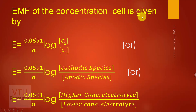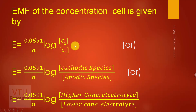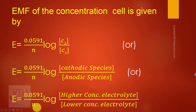The EMF of the concentration cell is given by: E = 0.0591 / n × log(C2 / C1), where n is the number of electrons lost during oxidation or gained during reduction in a balanced equation. This equation can also be represented as E = 0.0591 / n × log(concentration of cathodic species / concentration of anodic species), which is useful for solving problems. It can also be written as E = 0.0591 / n × log(concentration of higher concentration electrolyte / concentration of lower concentration electrolyte).